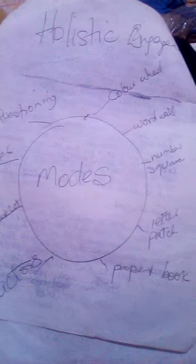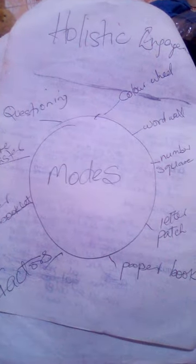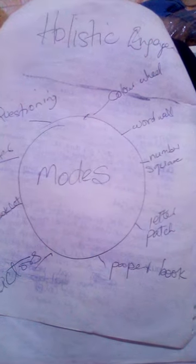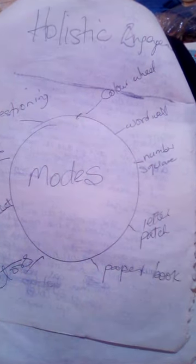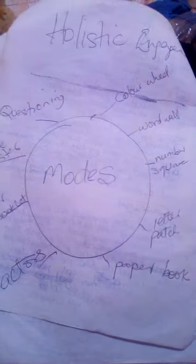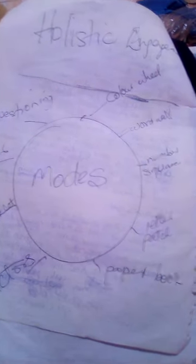What we are looking at today is the modes — we are looking at different modes. We talk about the mode of questioning, the color wheel, the word wall, the number square, the reflection, the letter patch, the paper book, and the factors. We talk about all these modes.